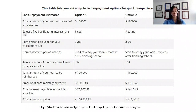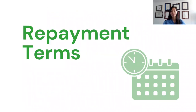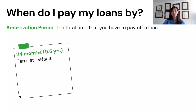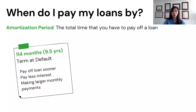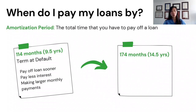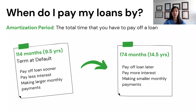This calculator might apply better after March 2023, when federal loan interest rates are no longer 0%. Now let's talk about repayment terms. The default amortization period is 114 months, or 9.5 years. A shorter amortization period means you pay less interest overall but make larger monthly payments. You can also do a revision of terms to extend it to 174 months or 14.5 years, which gives you more time but means you pay more interest and have smaller monthly payments.